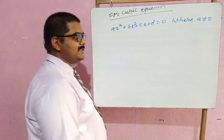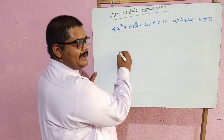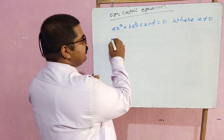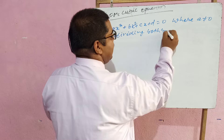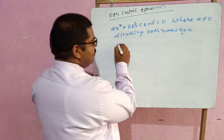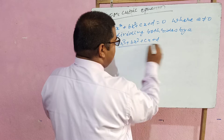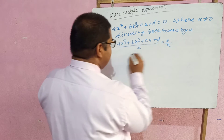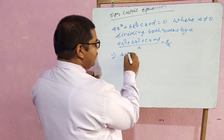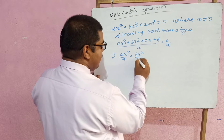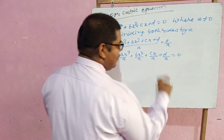For the cubic equation, the general form is Ax³ + Bx² + Cx + D = 0, where A does not equal zero. Dividing both sides by A gives: Ax³/A + Bx²/A + Cx/A + D/A = 0, which simplifies to x³ + (B/A)x² + (C/A)x + (D/A) = 0.